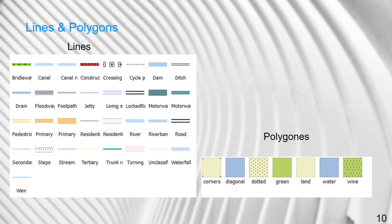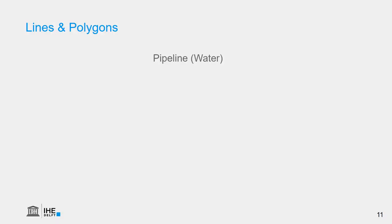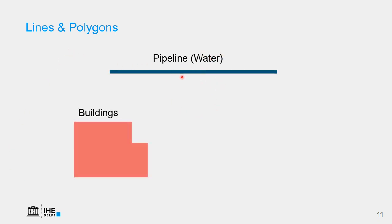For lines, we also have a set of tools we can use. We can change the width of the line and the type of the line. And for polygons, we can choose the filling, the outline, and the pattern of the polygon. Here we see some examples: a pipeline for water in blue, a polygon with buildings in red, and a park or forest in green.